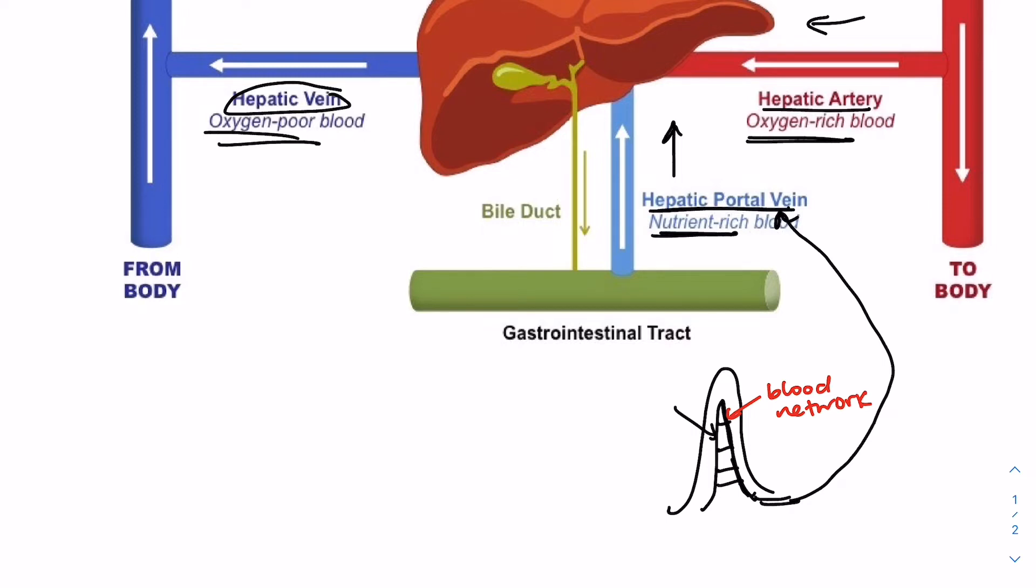The liver also produces plasma proteins, which function to maintain osmotic conditions within the bloodstream. And finally, it's responsible for the breakdown and recycling of red blood cells, as well as the production of bile salts.